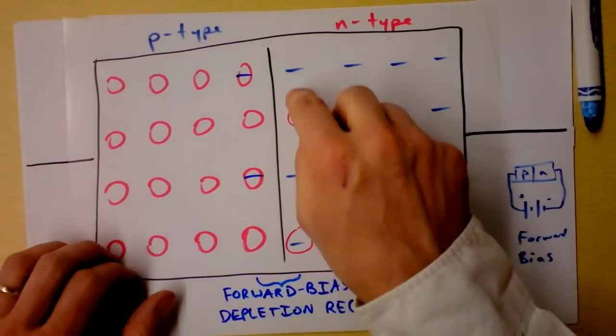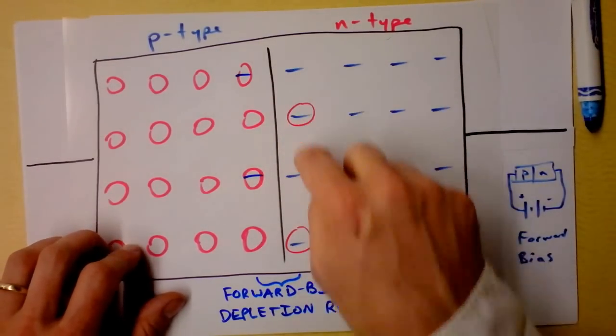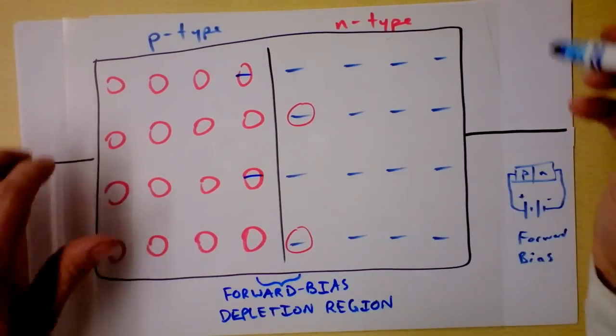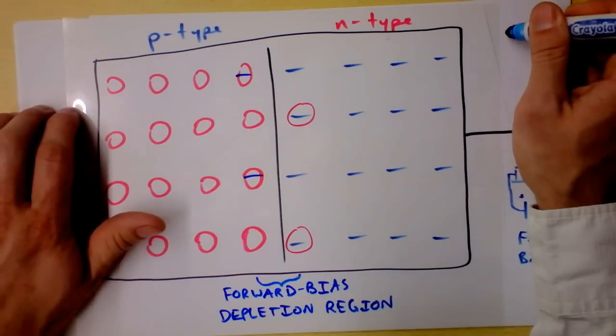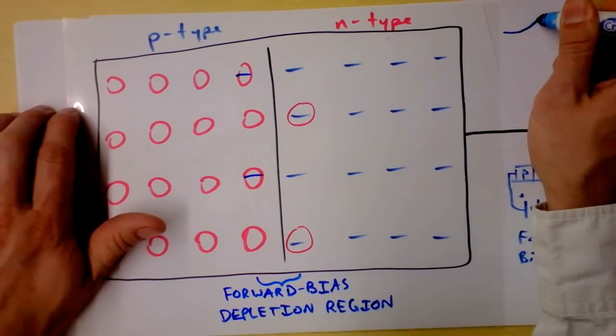Now the fact that there's a depletion region means that there's still some positive charge here and still some negative charge right there. But what we saw previously as the voltage between one side and the other,